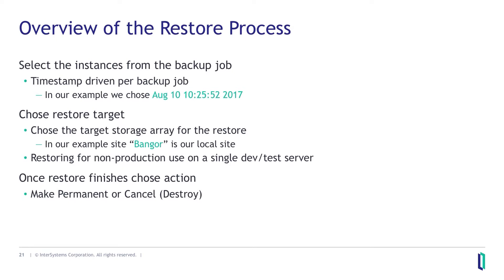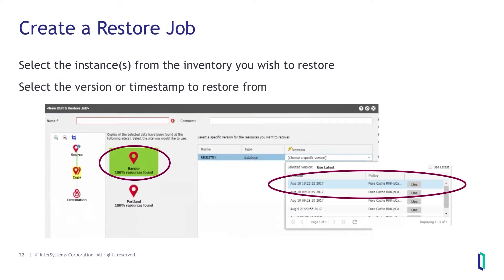Here's an overview of what the restore process looks like. You select the instances from the backup job — the timestamp is given per the backup job. In my example, I did one at August 10th at 10:25 AM, 52 seconds — that's where my exact point-in-time snapshot was taken across all volumes. Then you choose your restore target. Once you actually do a restore, you can choose an action: do I want to keep it permanently, cancel and destroy it, use it short-term or long-term?